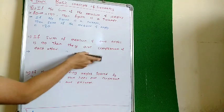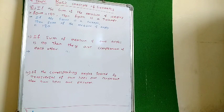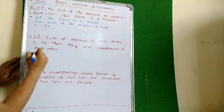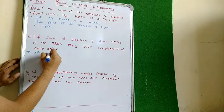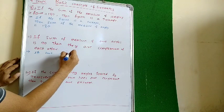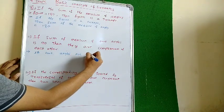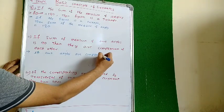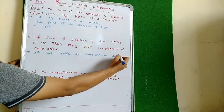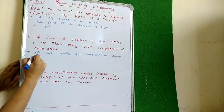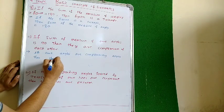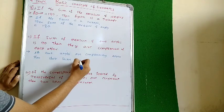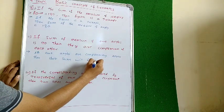So it is given that the sum of the measure of two angles is 90 degrees and they are complement of each other. So we can say: if two angles are complementary angles, then their sum will be 90 degrees.